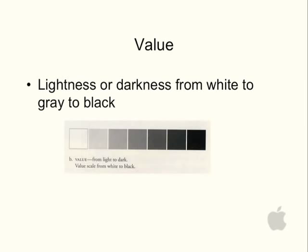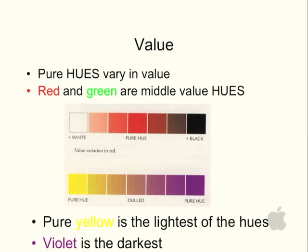Value. That's the lightness or darkness from white to gray to black. Pure hues vary in value. Red and green are middle value hues. Pure yellow is the lightest of the hues, while violet is the darkest. So violet is the darkest color, yellow is the lightest.